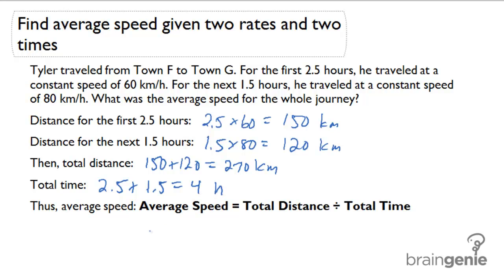Now that I have total distance and total time I can calculate average speed by dividing total distance by total time. So average speed is going to equal 270 divided by 4 which equals 67.5 kilometers per hour.